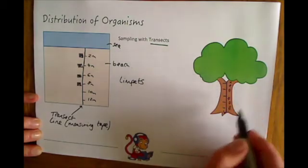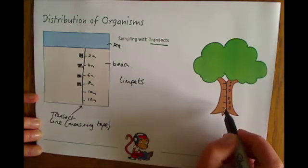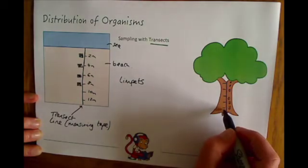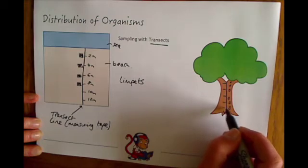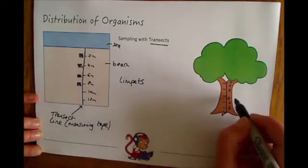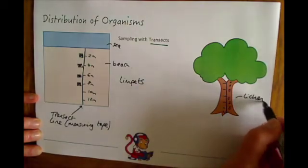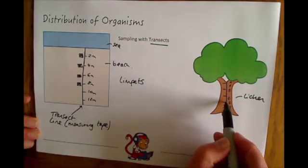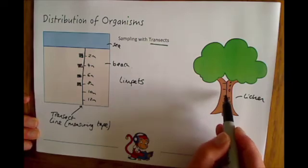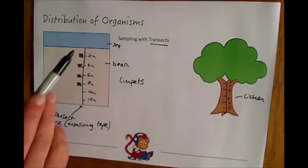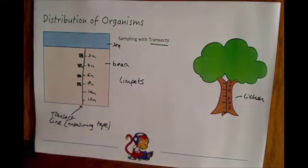Again, similar format: at certain distances you would either put your quadrat down, or use a smaller quadrat or select a sampling area, count the number of organisms there—for example, if you're looking at lichen—then go to the next stop, count the number of organisms, and so on, to get a distribution along a certain distance.